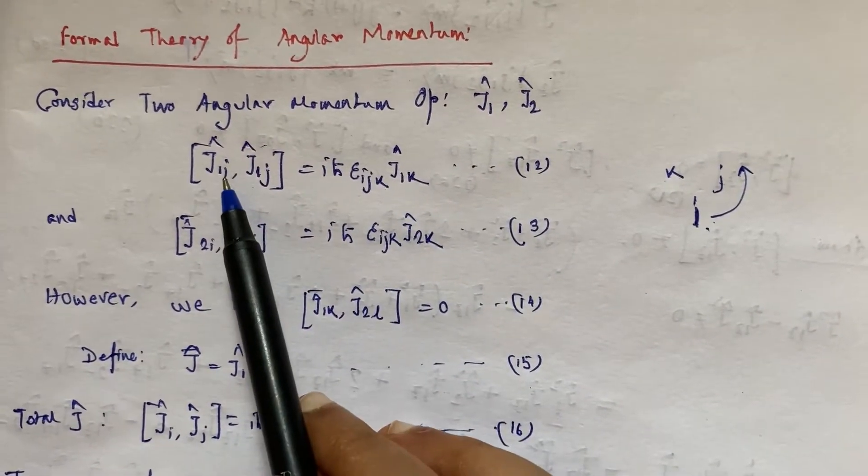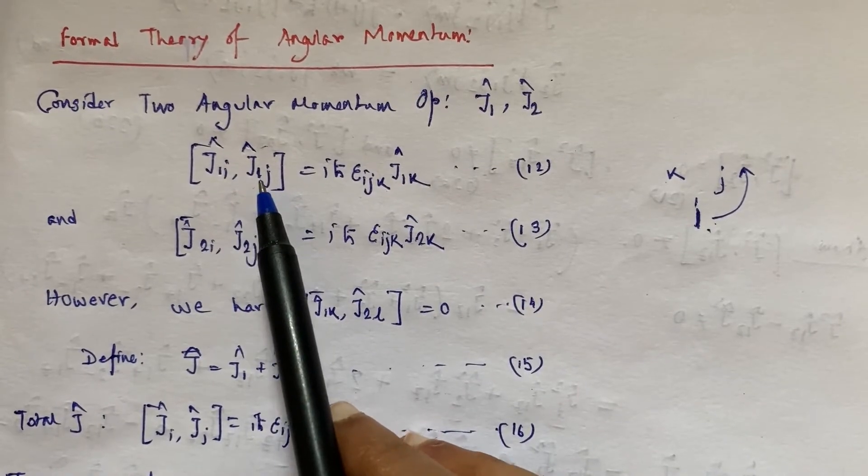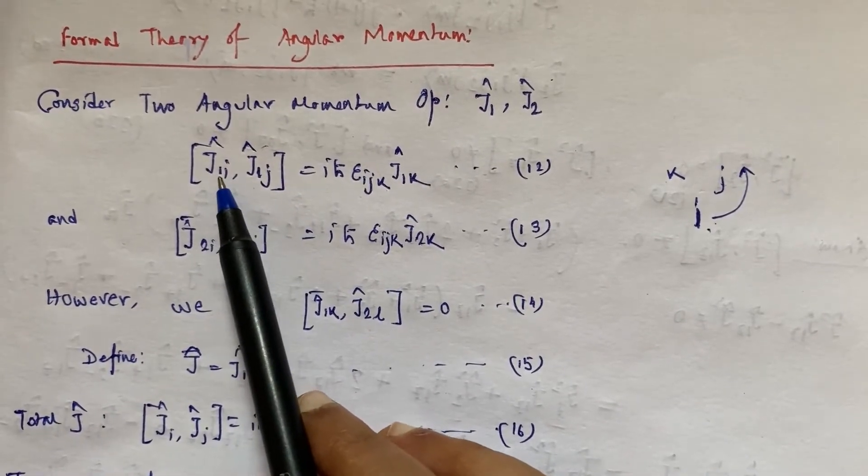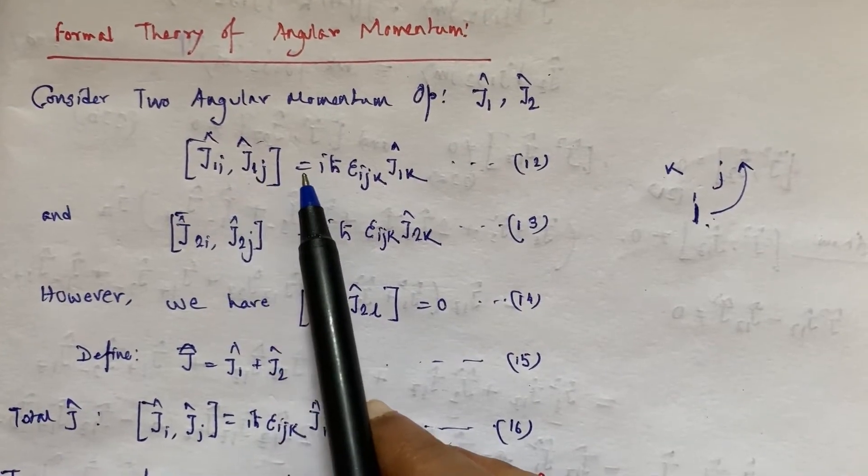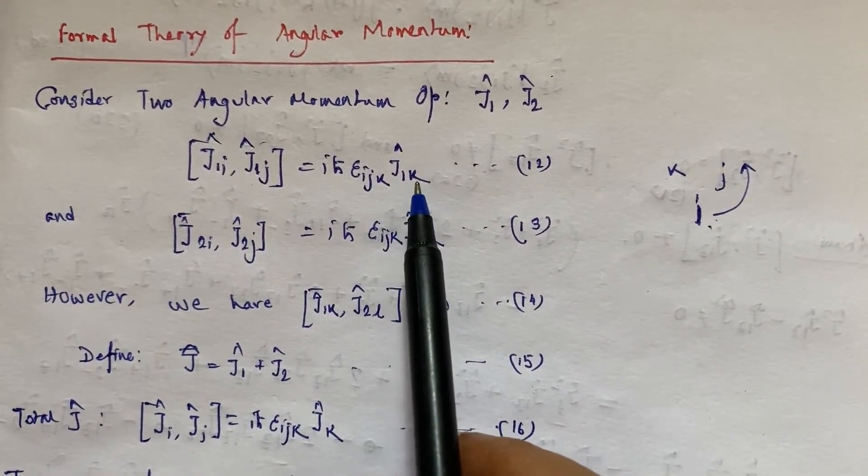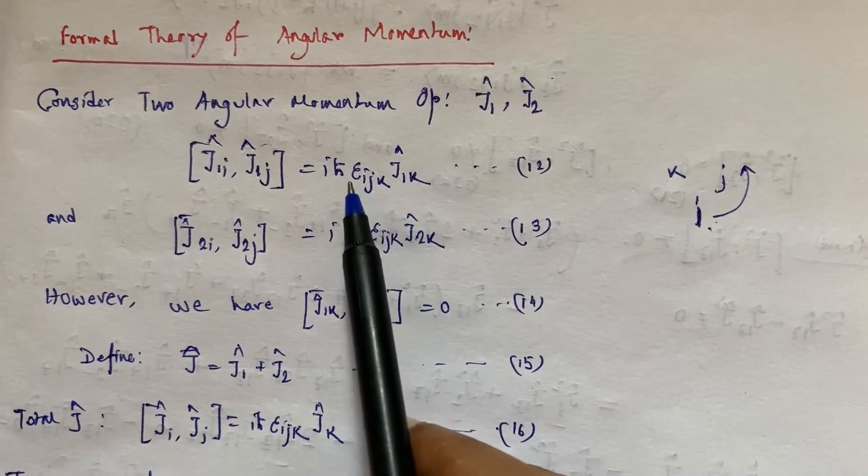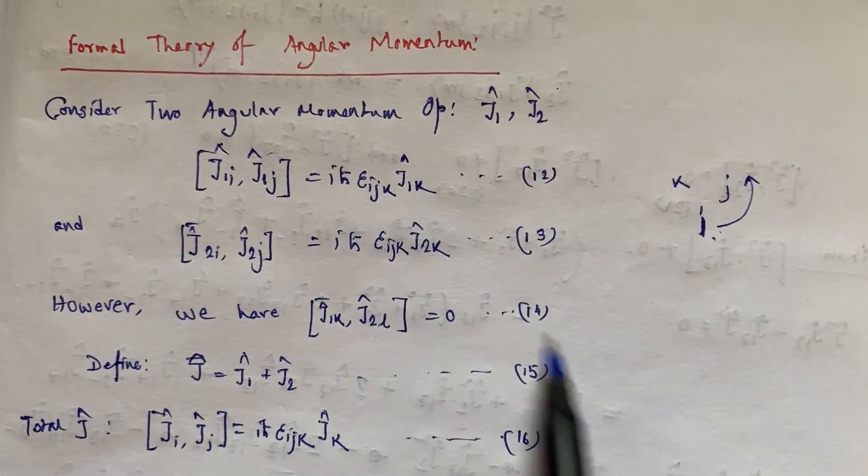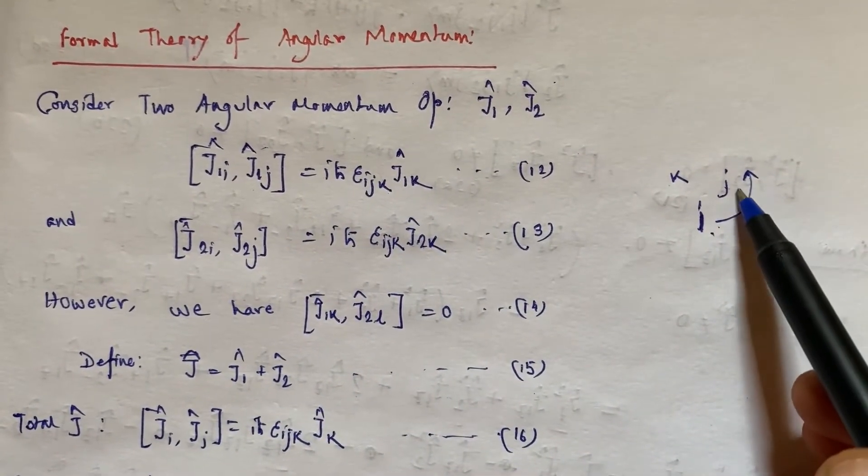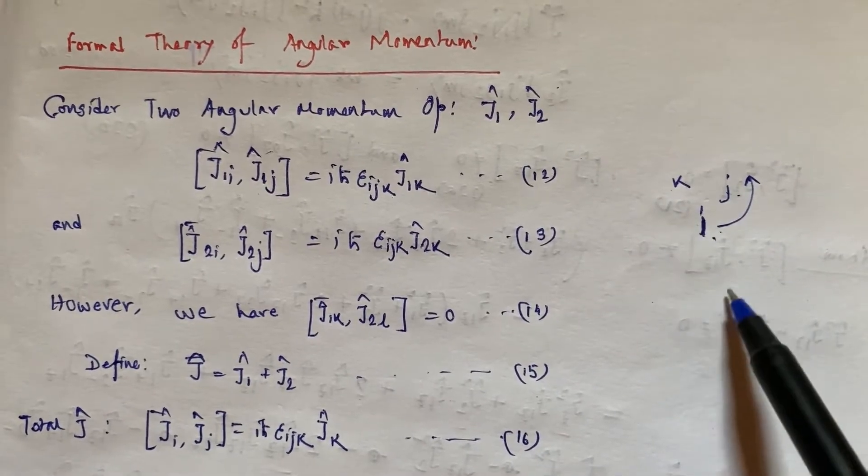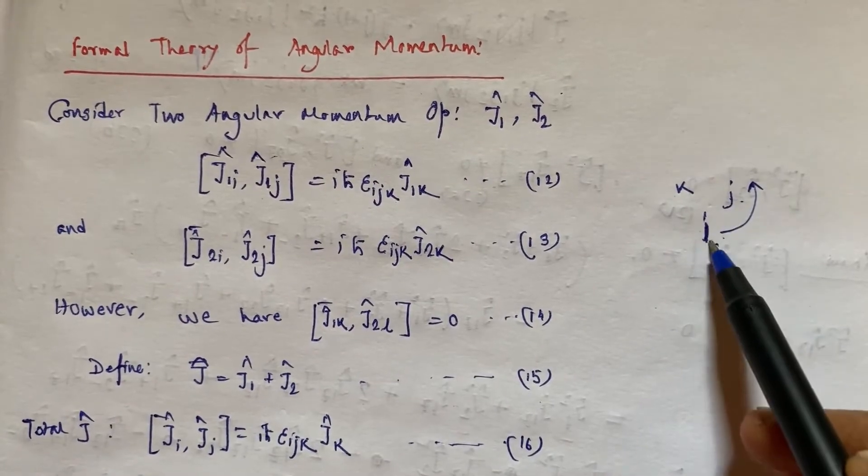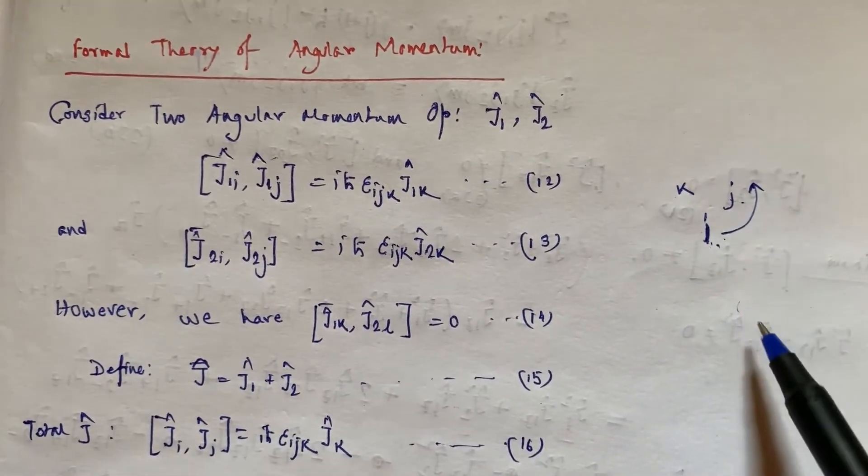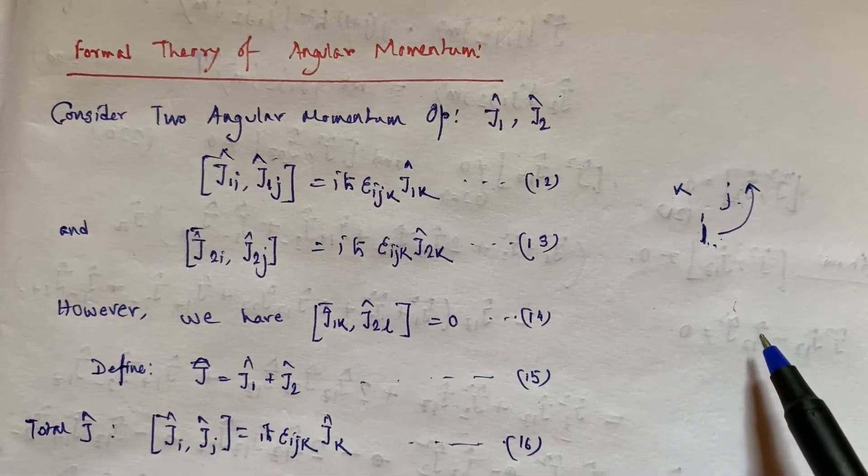But if this is j and this is i, for example if this is J₁j and if this is J₁i and this is J₁k, then this would be epsilon jik. The sequence is not maintained. The sequence must be ijk or jki or kij, always counterclockwise.